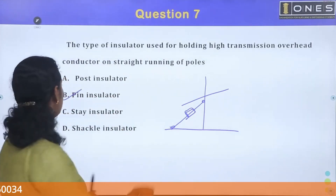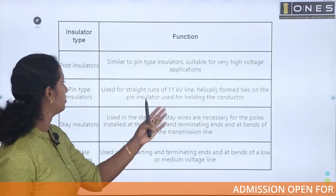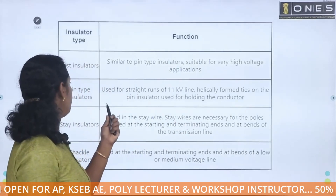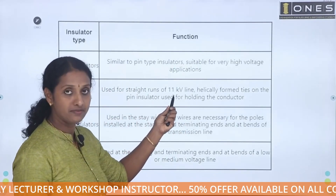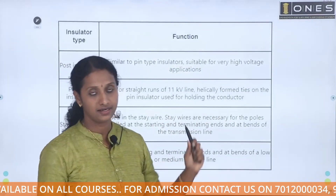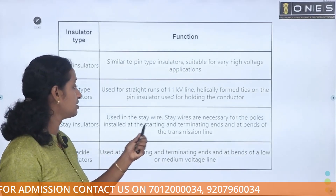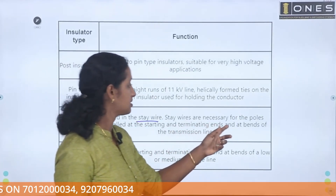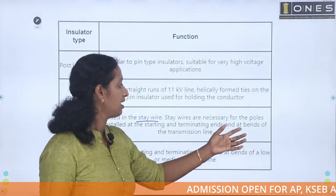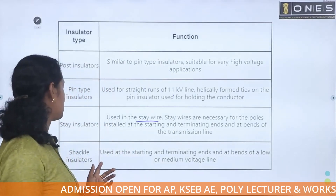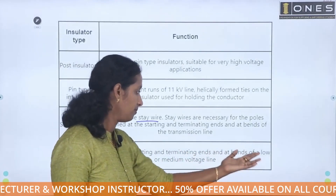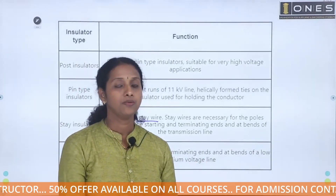Option B is the correct answer. Post insulator is similar to pin type insulator but suitable for very high voltage applications. Pin type insulators are used for straight runs of 11 kV lines, with helically formed ties on the pin insulator to hold the conductor. Stay insulators are used in the stay wire. Stay wires are necessary for poles installed at the starting and terminating ends and at the bends of the transmission line. Shackle insulators are used at the starting and terminating ends and at the bends of a low or medium voltage line.